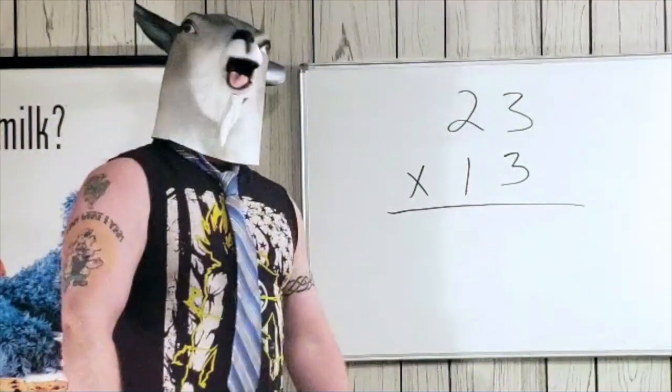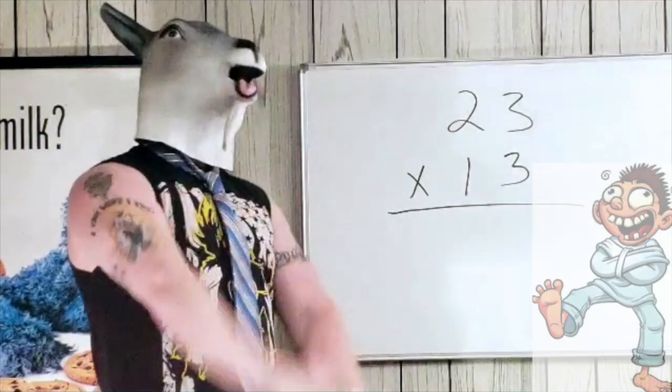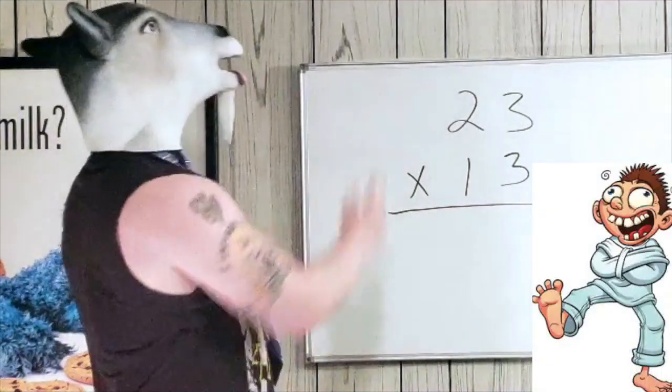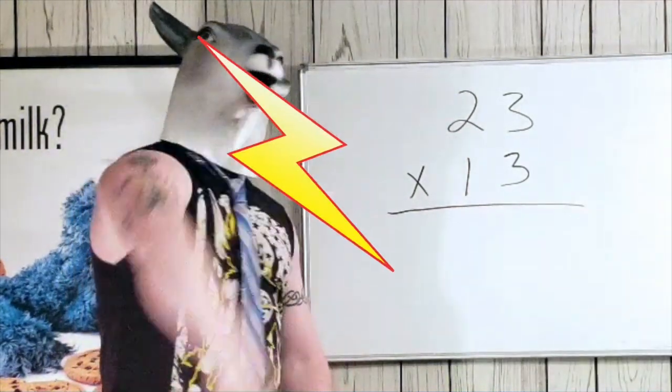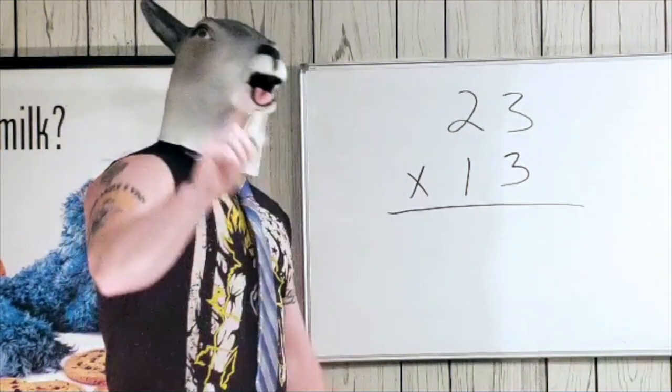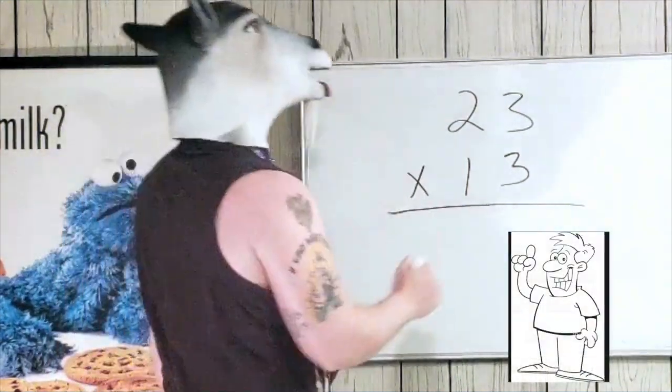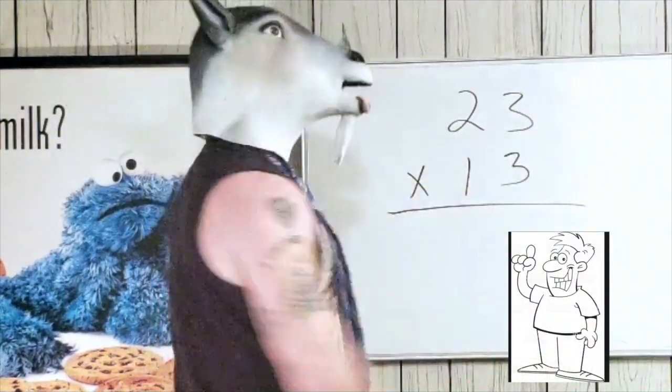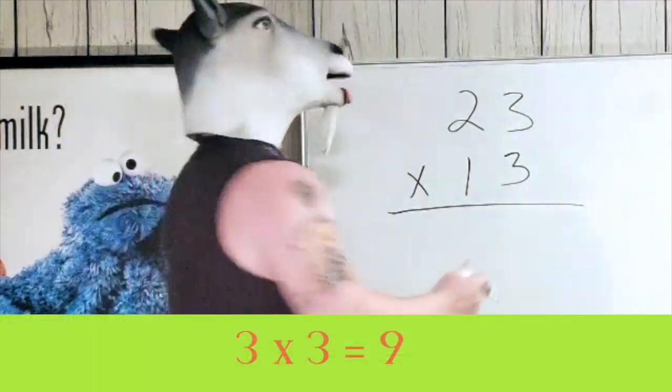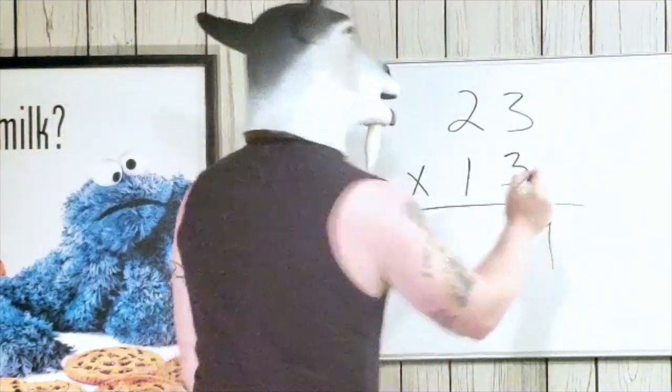Friends of the GOAT, welcome back. Today I'm gonna show you a crazy math trick that's gonna let you do two-digit multiplication in a flash. Alright, so the first thing we're gonna do is we're gonna start on this side right, we're gonna do 3 times 3. Alright, so 3 times 3 is 9, boom, put that sucker right there.